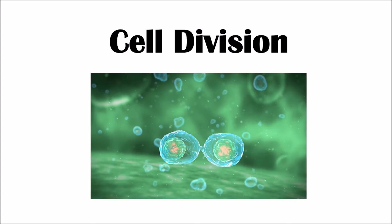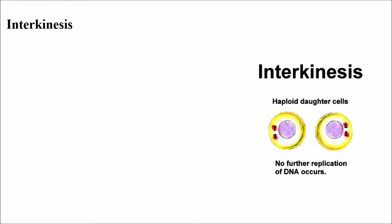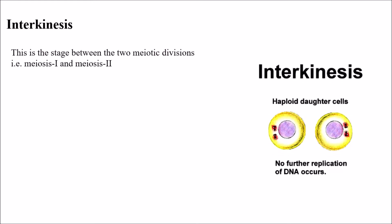Hi all, a very good evening. In today's class I will discuss about cell division, specifically interkinesis. In my earlier video classes you have gone through mitotic divisions and meiotic divisions. Interkinesis is the stage between the two meiotic divisions, that is meiosis 1 and meiosis 2. It occurs after the completion of meiosis 1 and before the starting of meiosis 2.